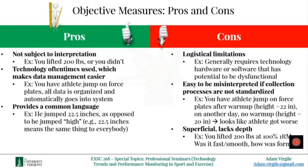Now we're going to move on to pros and cons of each of these measures. For objective measures, the outcomes are not subject to interpretation — you either lifted 200 pounds or you didn't, you either ran five miles or you didn't. Objective measures are oftentimes collected with technology, which is a pro. Today most of these measures are collected with technology, and when there is a software platform associated with that technology, accessing, organizing, and analyzing the data becomes a lot easier.